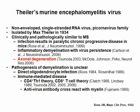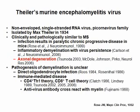The cause of demyelination is not clear. There are two theories. The first one is that direct virus infection kills myelin-forming cells, oligodendrocytes, and causes demyelination. The second one is that demyelination is mediated by immune responses. Some research groups propose CD4-positive T-helper 1 cells are the effector, and others propose that CD8-positive cytotoxic T cells are the effector. In addition, anti-virus antibody has been shown to cross-react with myelin antigen.